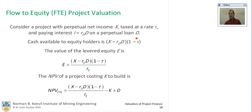For a flow-to-equity project valuation, we've got perpetual net income taxed at a rate tau, paying interest R_D times D on a perpetual loan D. The cash available to the equity holders is X minus I times (1 minus tau).